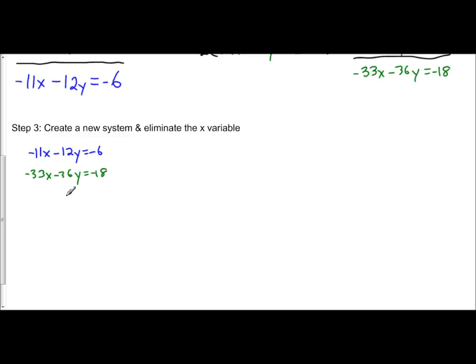Now, the whole point is to create opposites. Since I have a negative 33 here, I want this to be a positive 33. Since it's already negative, I'm going to multiply the top equation by a negative 3 to make it positive. That's going to give me a positive 33x, positive 36y, and then negative 3 and negative 6 is 18. The bottom equation stays the same of negative 33x minus 36y equals negative 18. So, I created my opposites, they will add and cancel out.